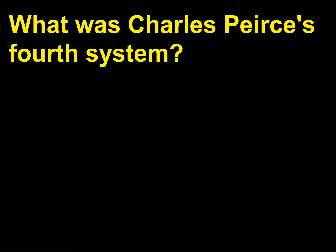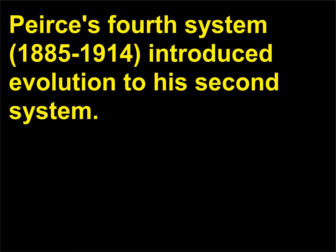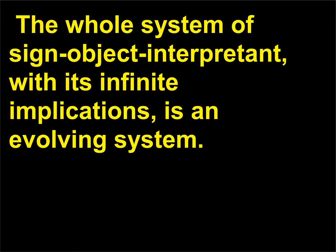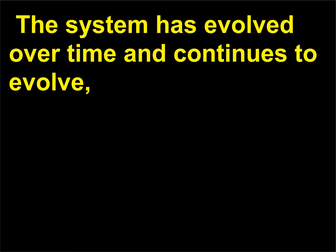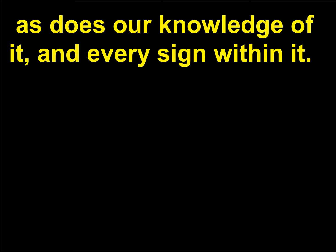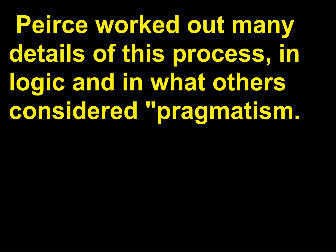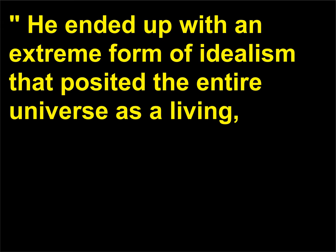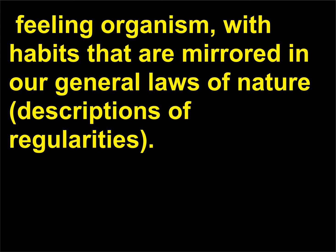What was Charles Peirce's fourth system? Peirce's fourth system, 1885–1914, introduced evolution to his second system. The whole system of sign-object-interpretant, with its infinite implications, is an evolving system. The system has evolved over time and continues to evolve, as does our knowledge of it, and every sign within it. Peirce worked out many details of this process in logic and in what others considered pragmatism. He ended up with an extreme form of idealism that posited the entire universe as a living, feeling organism, with habits that are mirrored in our general laws of nature — descriptions of regularities.